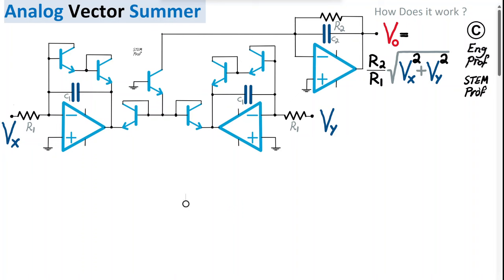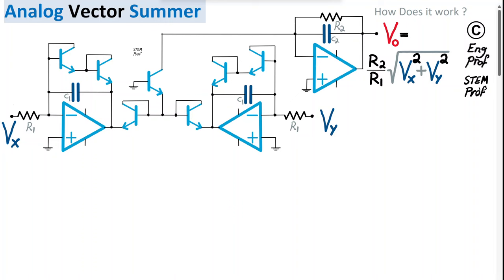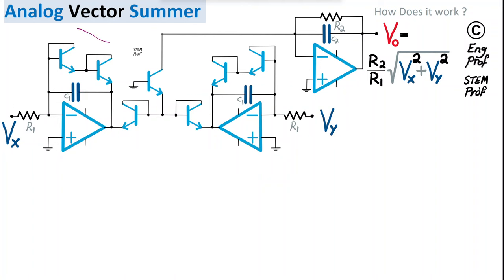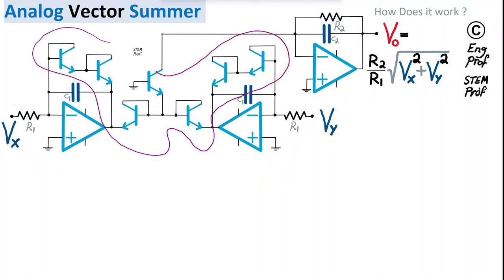An analog vector summer is explained in this circuit design example. It is implemented with three operational amplifiers (op-amps) and seven properly matched NPN bipolar junction transistors (BJTs) as shown.